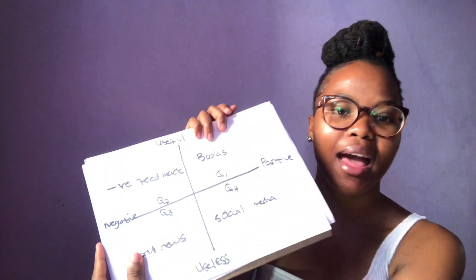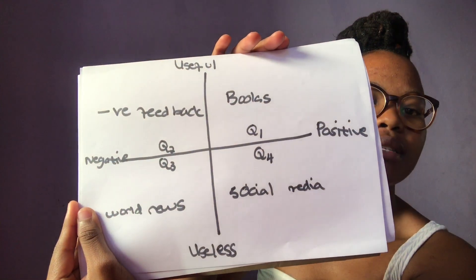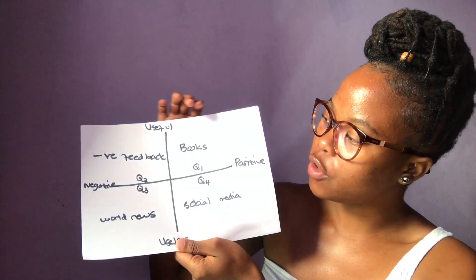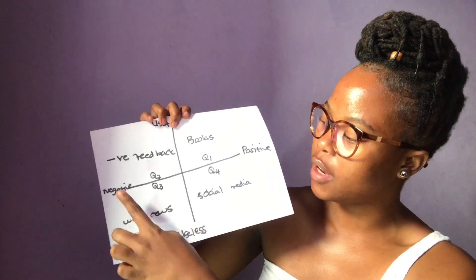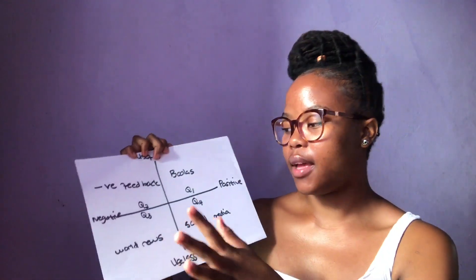I have a diagram here with four quadrants. Before I get into the how-to of handling information overload, I want to explain the different types of information and why it leads to us having an overload and feeling overwhelmed. The four categories I have are: useful, useless, negative, and positive.